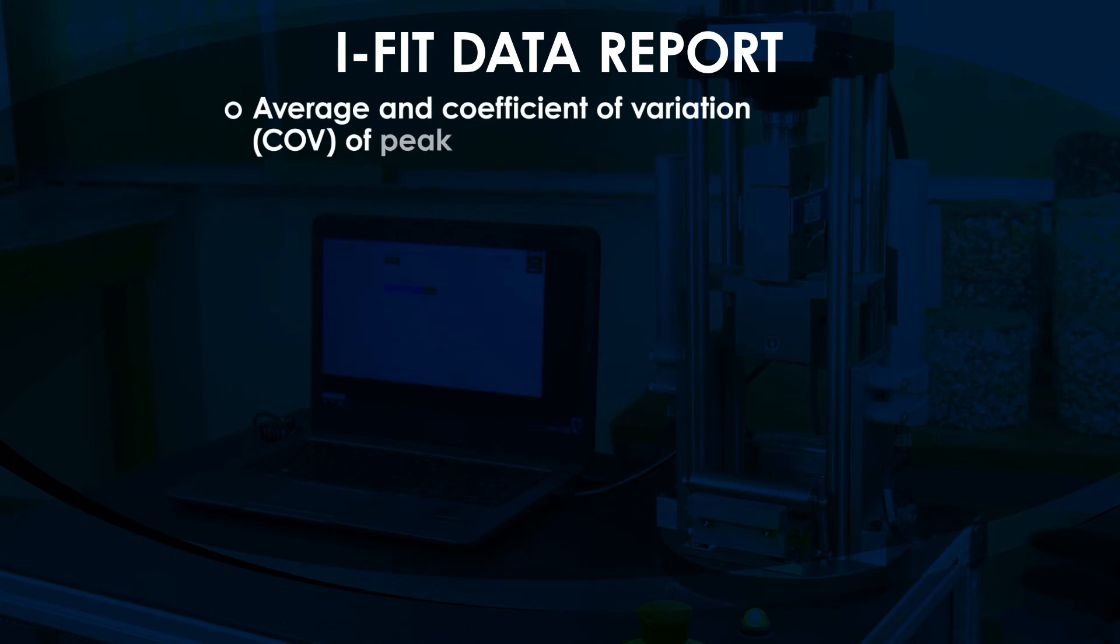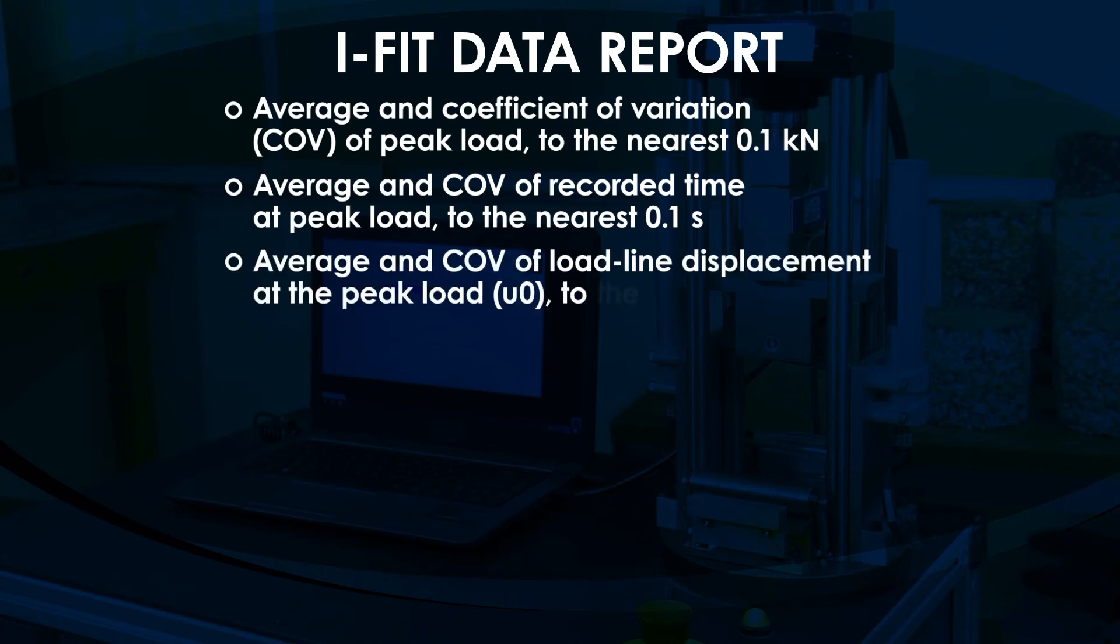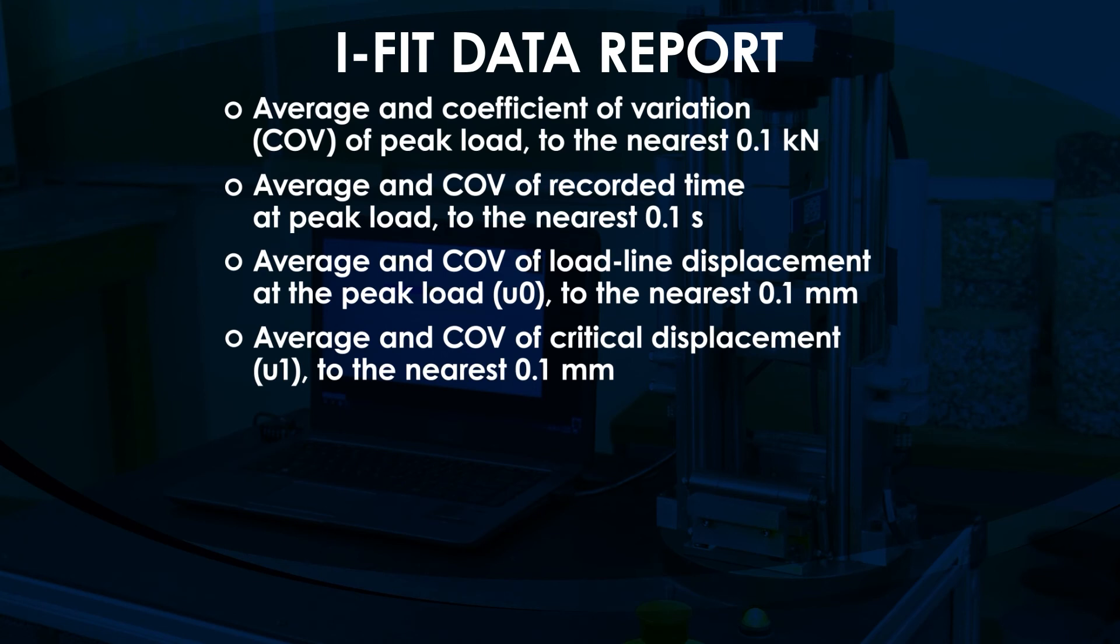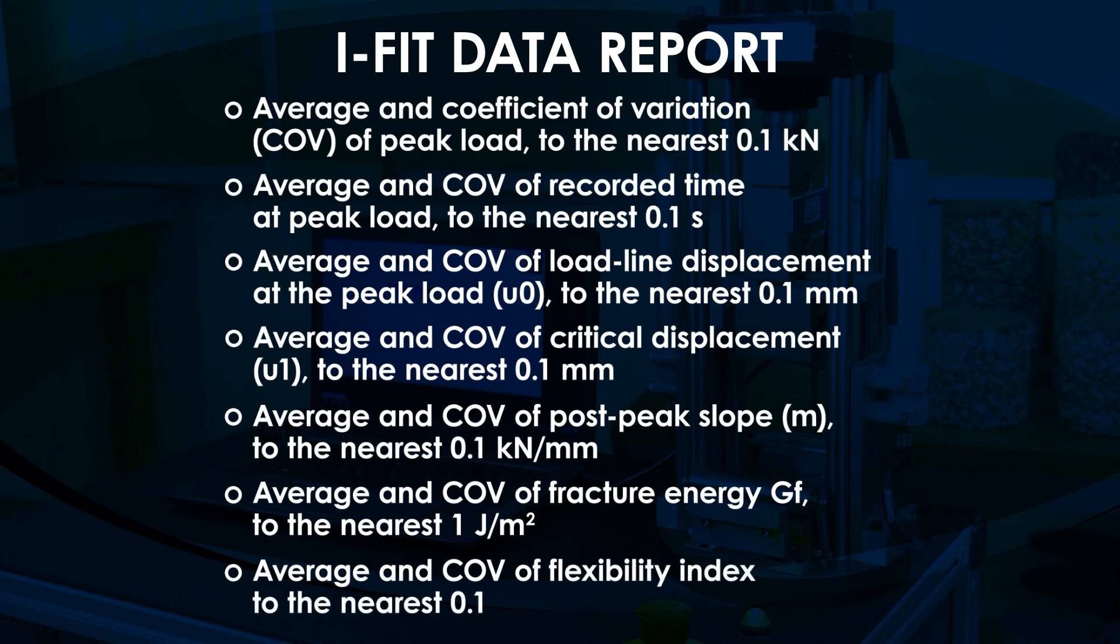Average and coefficient of variation, or COV, of peak load to the nearest 0.1 kilonewtons. Average and COV of recorded time at peak load to the nearest 0.1 seconds. Average and COV of load line displacement at the peak load to the nearest 0.1 millimeters. Average and COV of critical displacement to the nearest 0.1 millimeters. Average and COV of post peak slope to the nearest 0.1 kilonewtons per millimeter. Average and COV of fracture energy to the nearest 1 joule per meter squared. And average and COV of Flexibility Index to the nearest 0.1.